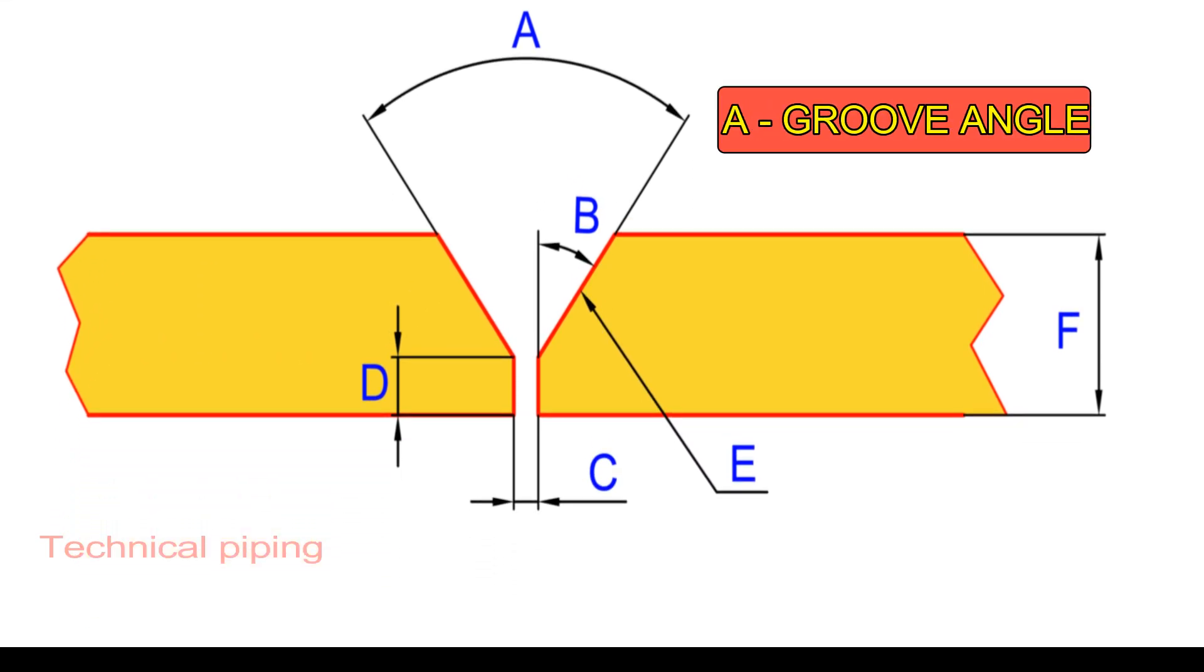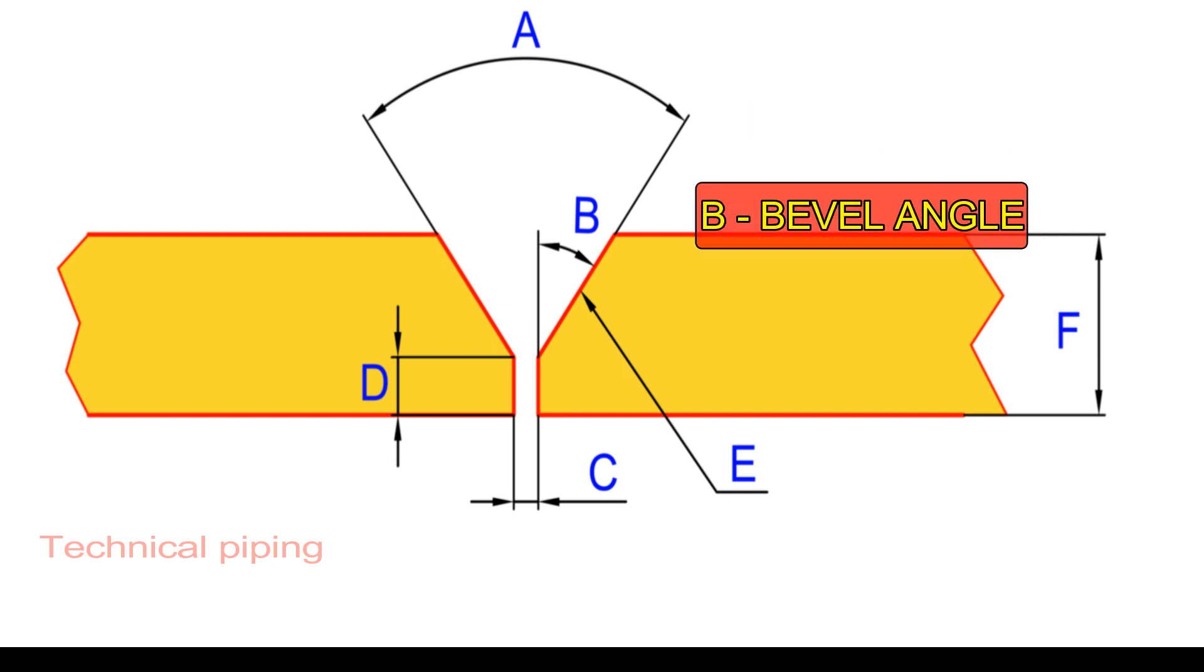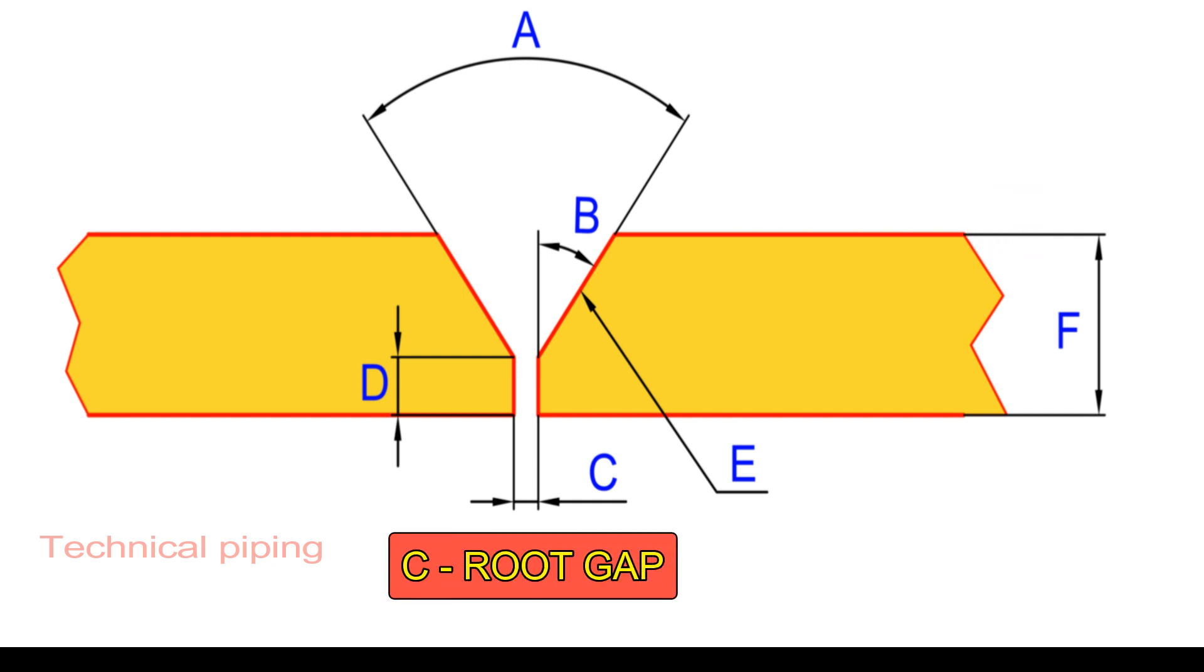Letter A denotes groove angle. Letter B denotes bevel angle. Letter C denotes root gap.